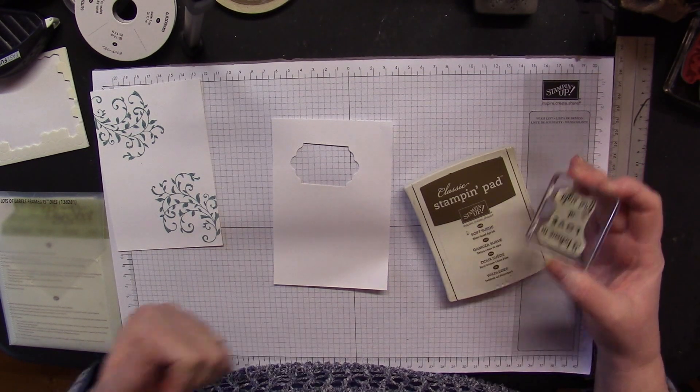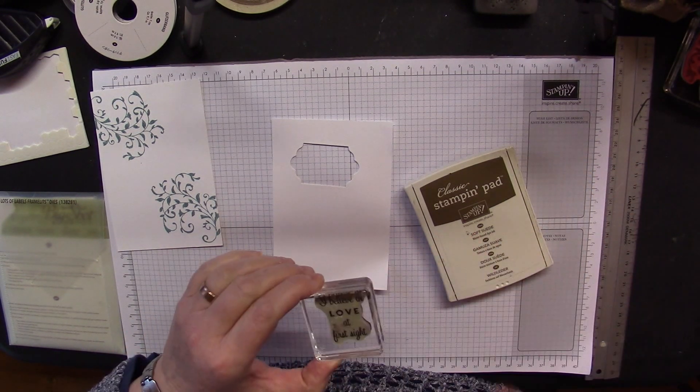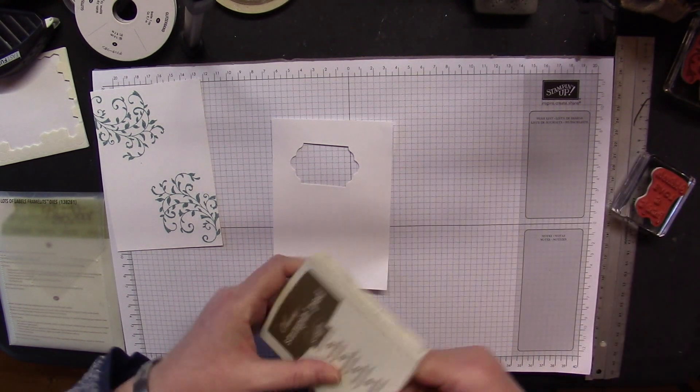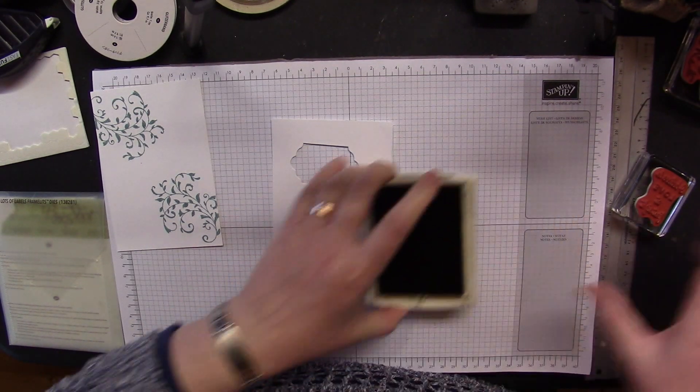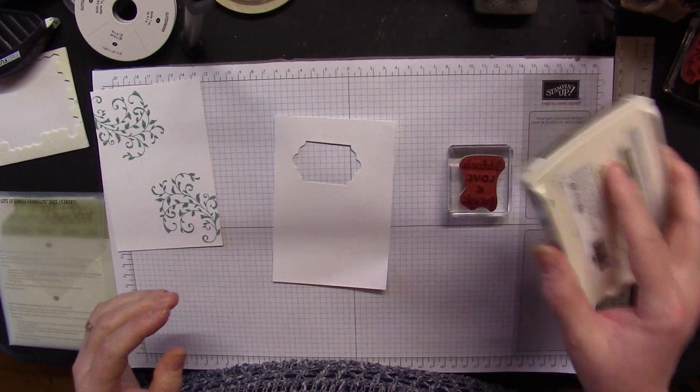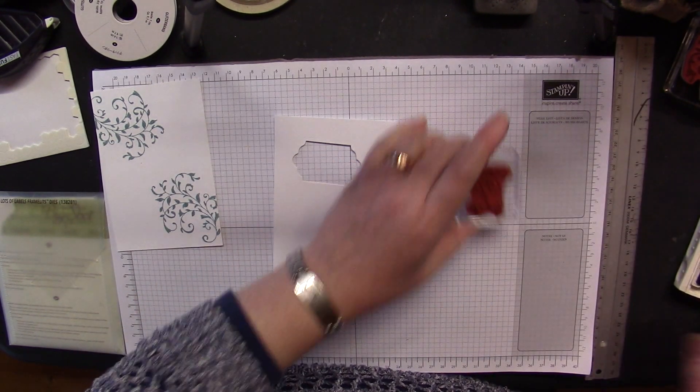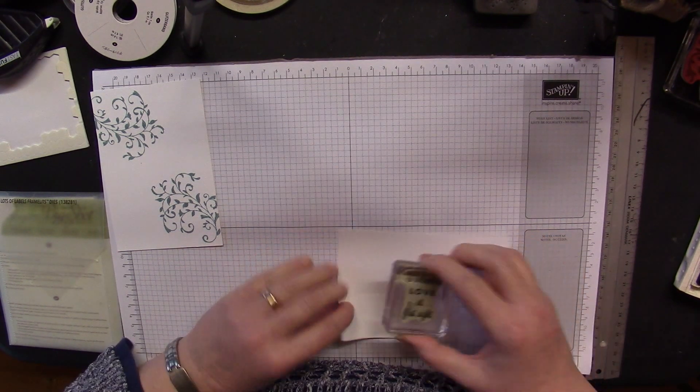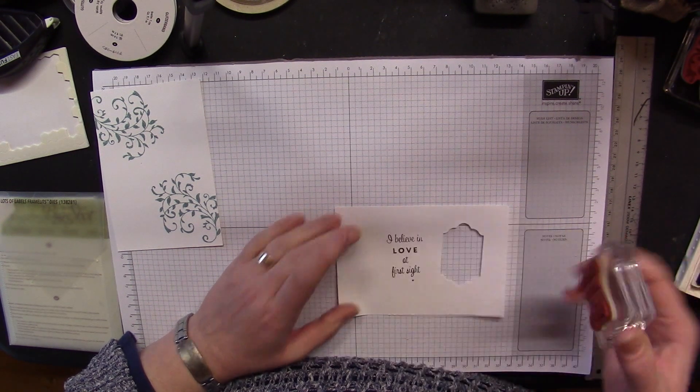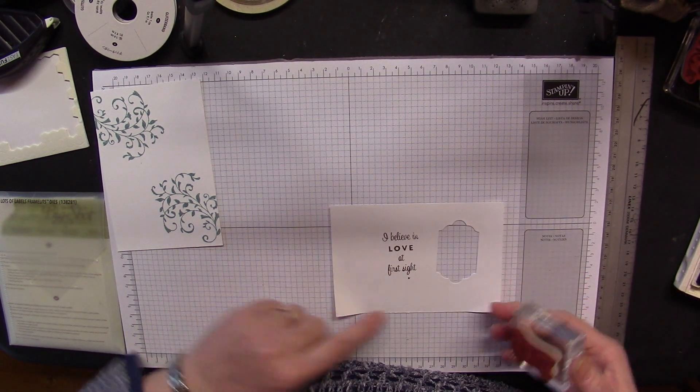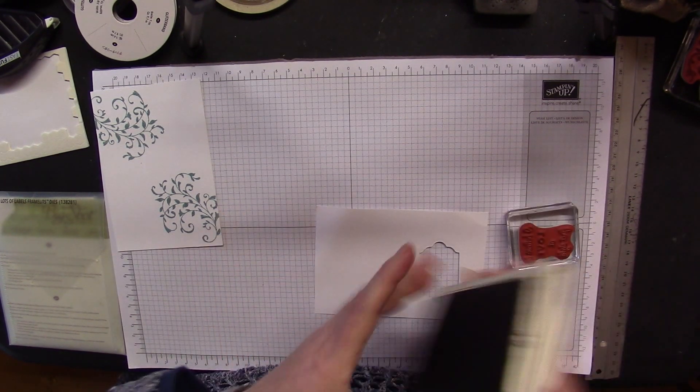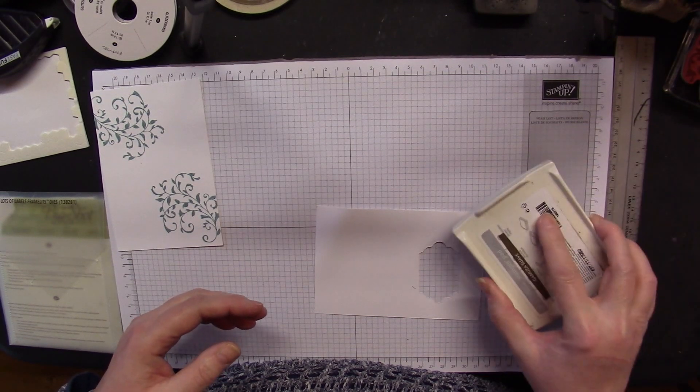You're going to stamp using the 'I believe in love at first sight' sentiment. I'm using Soft Suede for that. It's a beautiful color and has an almost gold look to it when it dries. If you haven't got gold, it's a great substitute. Straight down, straight back up. I've contaminated it down there, so I'm going to turn over and try again on the other side.